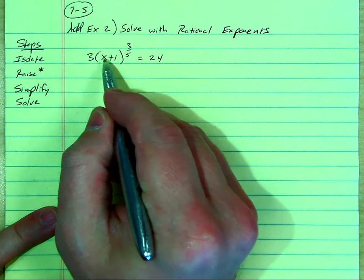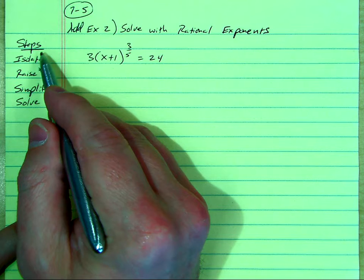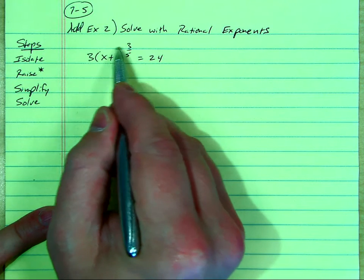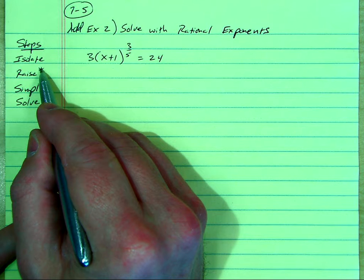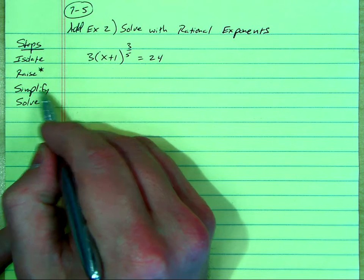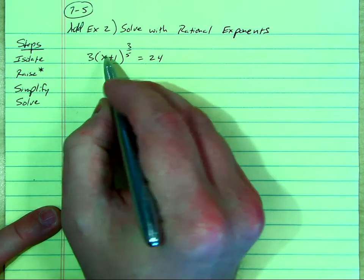Here we have the rational exponent we're going to try to solve for x. Here are the basic steps. We're going to isolate the exponential expression, then we're going to raise both sides to a power. I put asterisks because it depends on what the power is. And then we're going to simplify and solve.